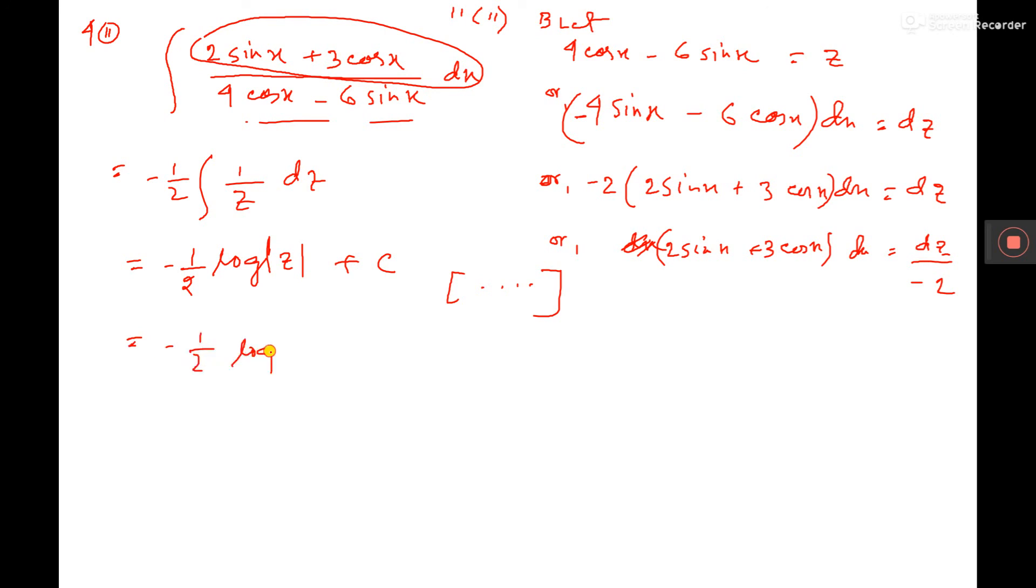Now, put the value of z. z is 4 cos x minus, here you have considered the value. 6 sin x, that I am putting here, plus c.